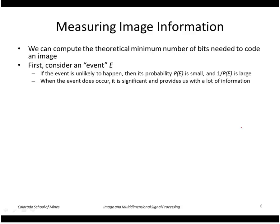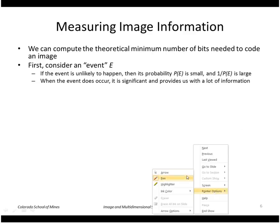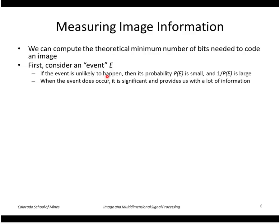So first consider an event e, say a coin flip. If the event is unlikely to happen, it has a small probability P(e), and 1 over P(e) would be large. When the event does occur, it's significant and provides a lot of information.